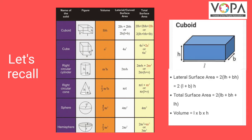lateral surface area is equal to 2 multiplied by (length plus breadth) multiplied by height. Total surface area of a cuboid is equal to 2 multiplied by (length × breadth + breadth × height + length × height). Volume of cuboid is equal to length × breadth × height.